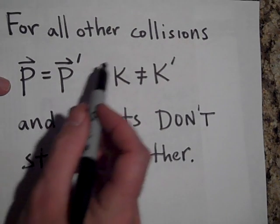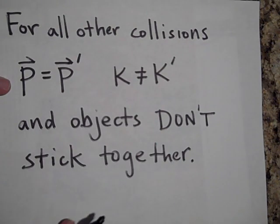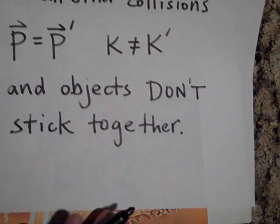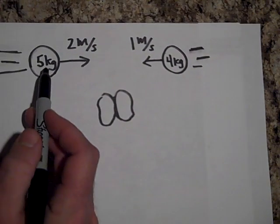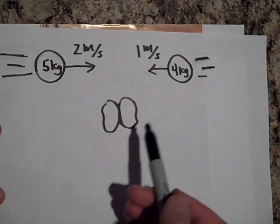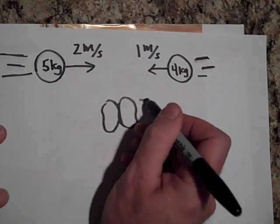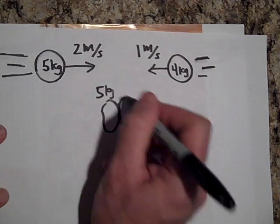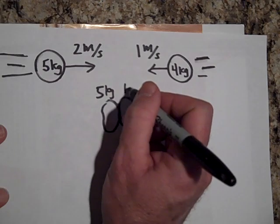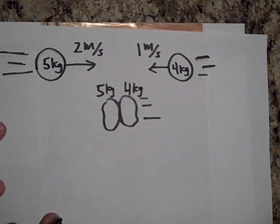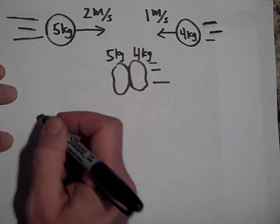For all other collisions, the objects don't stick together — when they do stick, that's what makes it completely inelastic. Here's an example: a 5 kg mass moving at 2 m/s collides with a 4 kg mass moving the other way at 1 m/s. They hit and stick together. Since they stick, this is a completely inelastic collision, so we use p equals p prime.